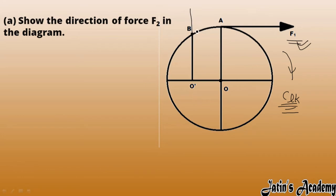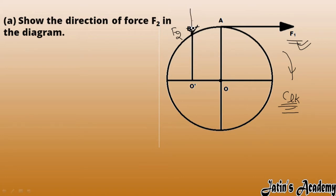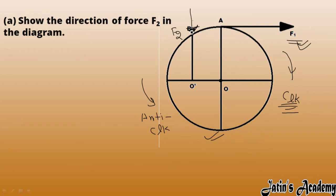We need to determine whether force F2 acts upward or downward. The force and its perpendicular distance create an anticlockwise moment, so the clockwise and anticlockwise moments cancel, giving zero net moment — meaning the body is stationary. The diagram shows that F2 acts in the downward direction at point B.